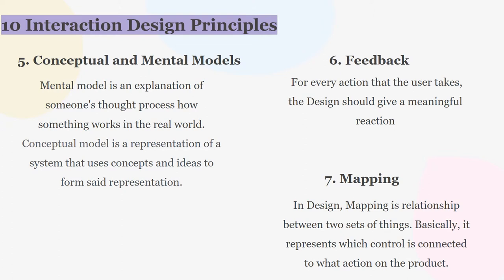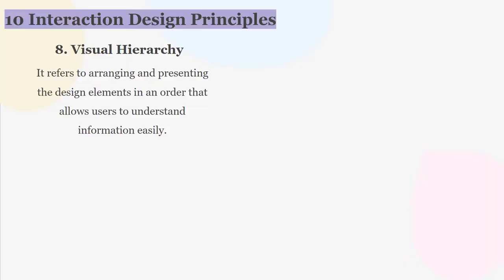Next is mapping. In design, mapping is a relationship between two sets of things — it represents which control is connected to what action on the product. Think about your car: when you turn your wheel to the right, it moves right; when you steer left, it moves left. Or think about a scroll bar in a UI — when you move it up, the screen moves up; when you move it down, it moves down.